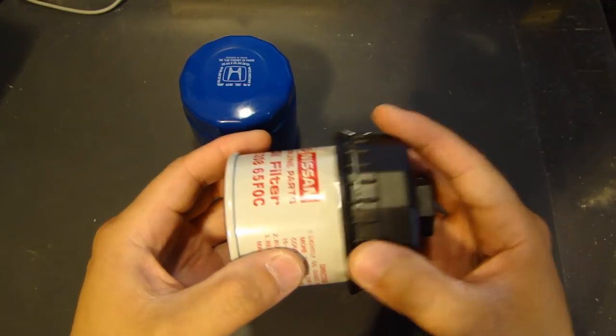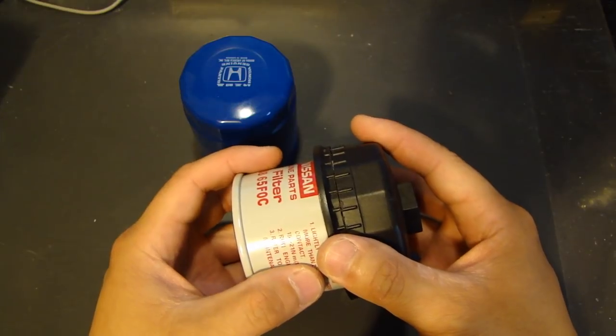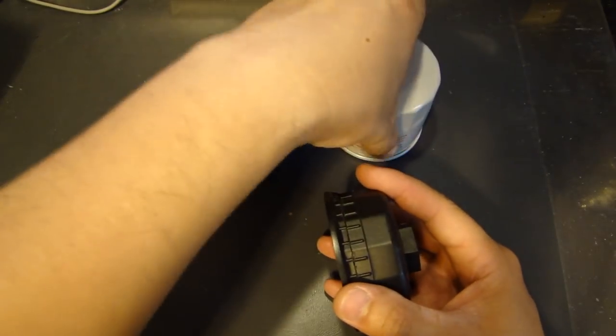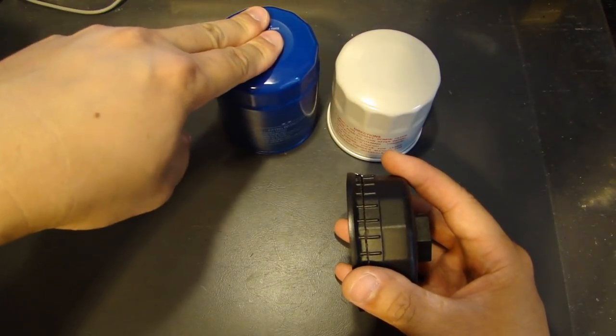Now on the other hand, if you have the Nissan filter, it does go in the full depth of it. But the problem is that the size does not match properly. Again, there's a 63 millimeter, 64 millimeter.